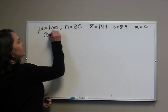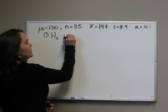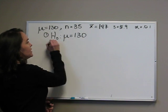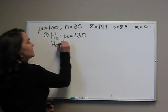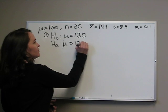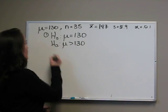First step, null and alternative. In this case, mu equals 130. Alternative is mu is greater than 130. So it's whatever we're testing. We think it's larger than 130.